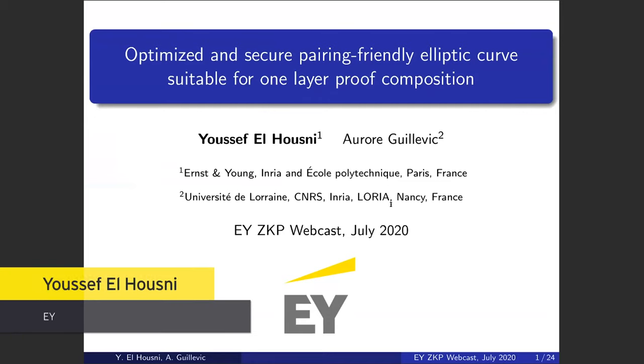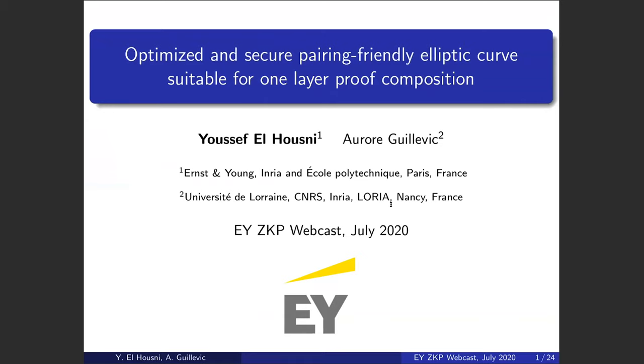Hi, everyone. My name is Youssef Al-Husni. I work at EY in the blockchain team and I'm also a first year PhD student in GRACE team at École Polytechnique and INRIA. Today's presentation is about a joint work with Aurore Guillevic, who works at INRIA-CNRS. It is a joint paper titled Optimized and Secure Pairing Friendly Elliptic Curves Suitable for One-Layer Proof Composition.